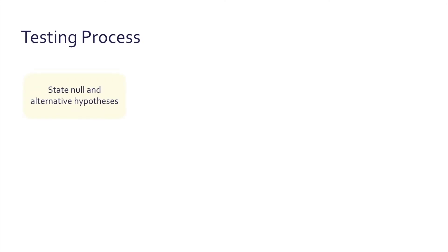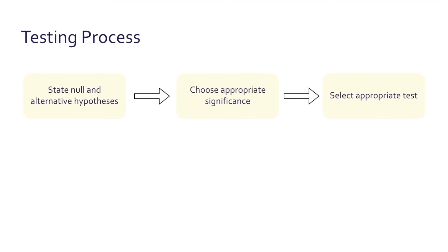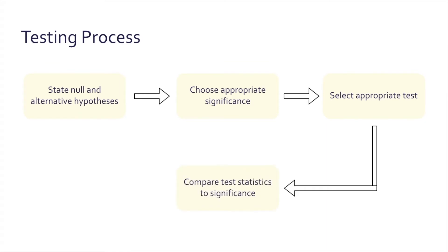Now that we've discussed the what, we can discuss the how of hypothesis testing — the testing process. It starts with stating the null and alternative hypothesis. Once you have those, you select appropriate significance levels, which will be covered in the next video. Then you select the appropriate test statistic. When you have calculated the test statistic, you compare that to your significance. Those last steps will be discussed in a separate video covering significance levels, p-values, and test statistics.